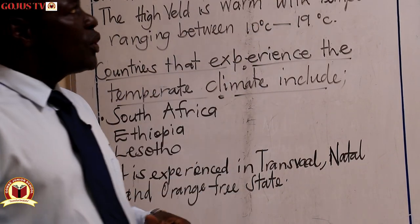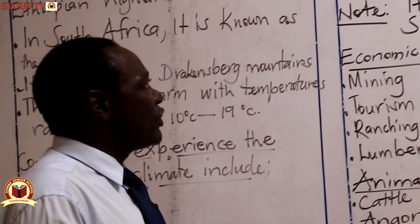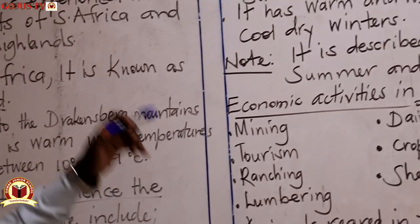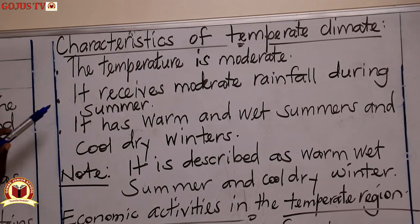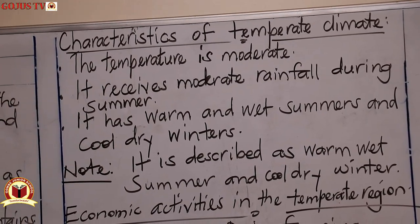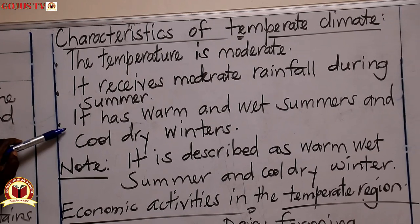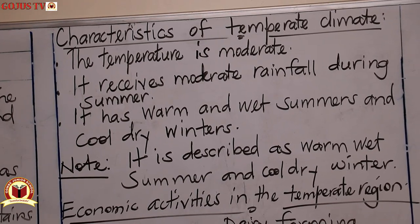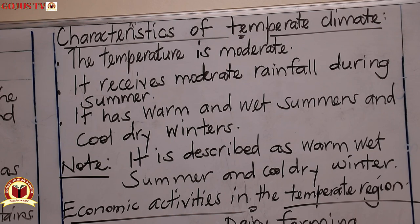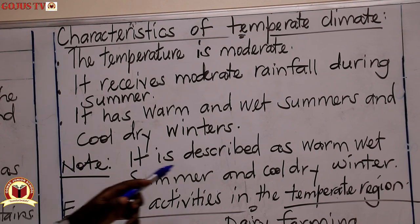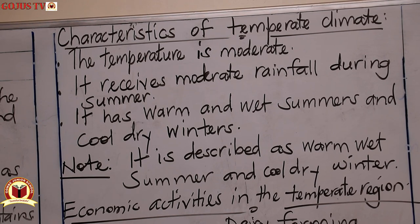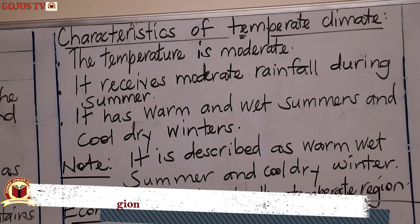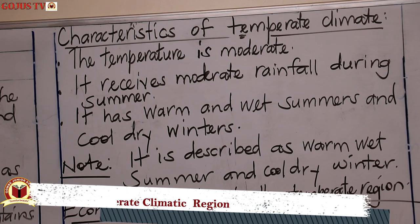Now, what are the characteristics of the temperate climatic region? One, the temperature is moderate. It receives moderate rainfall during the summer. It has warm and wet summers and cool dry winters. Note this — it is described as warm wet summers and cool dry winters.